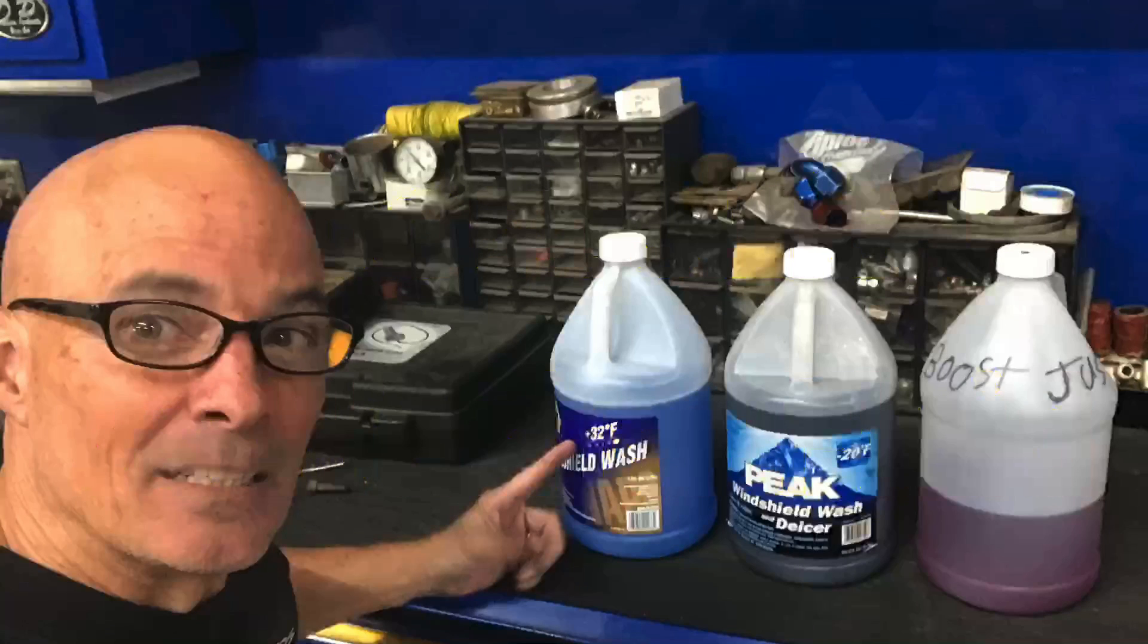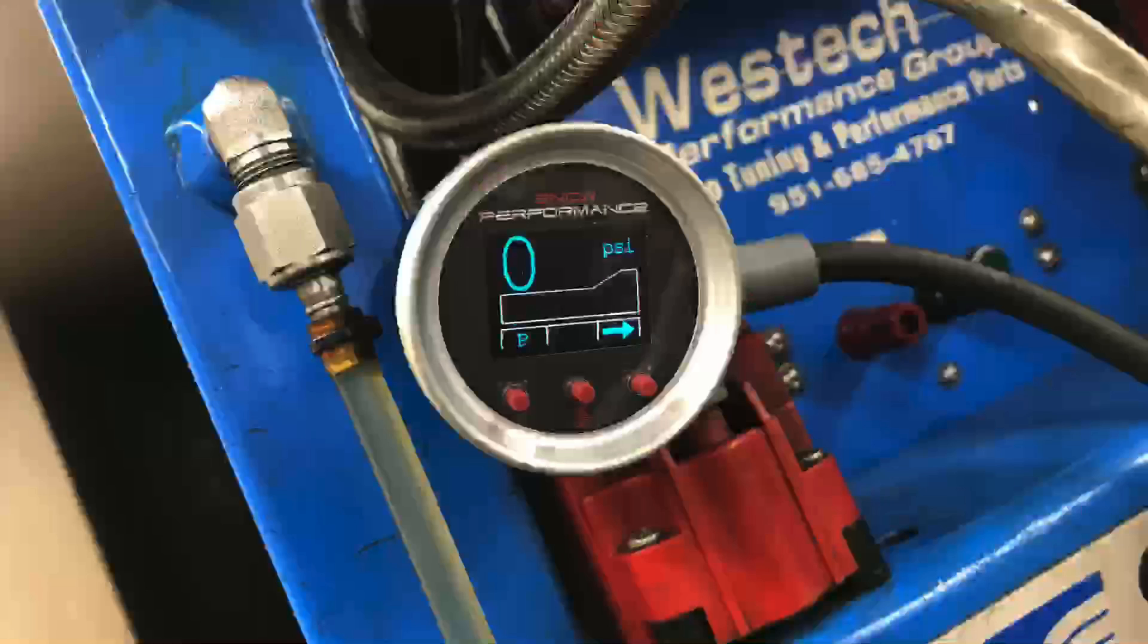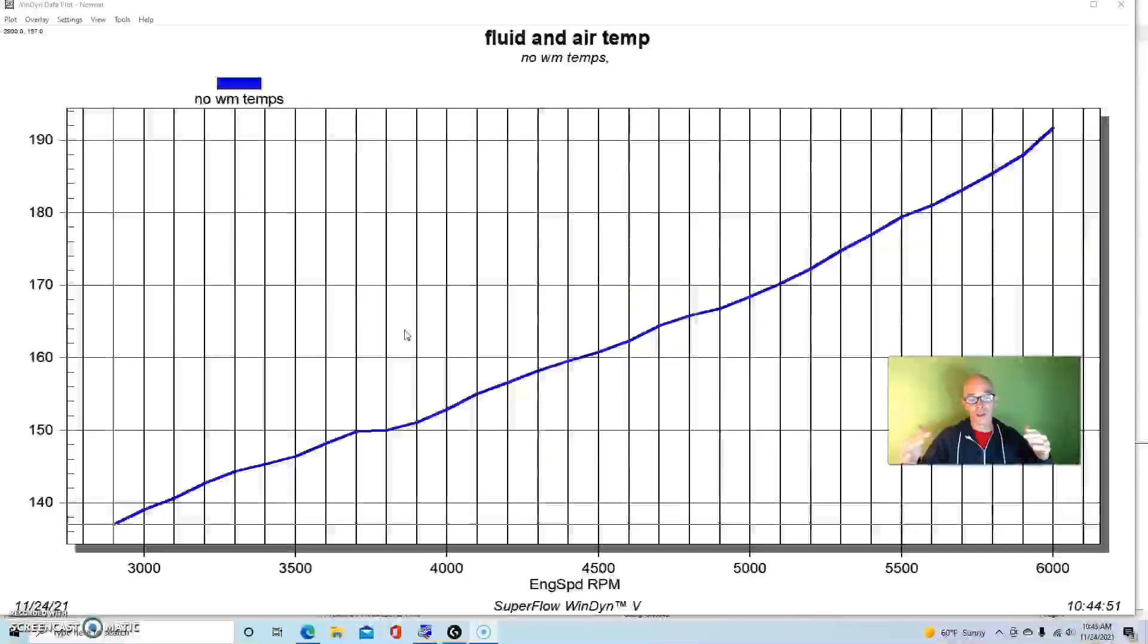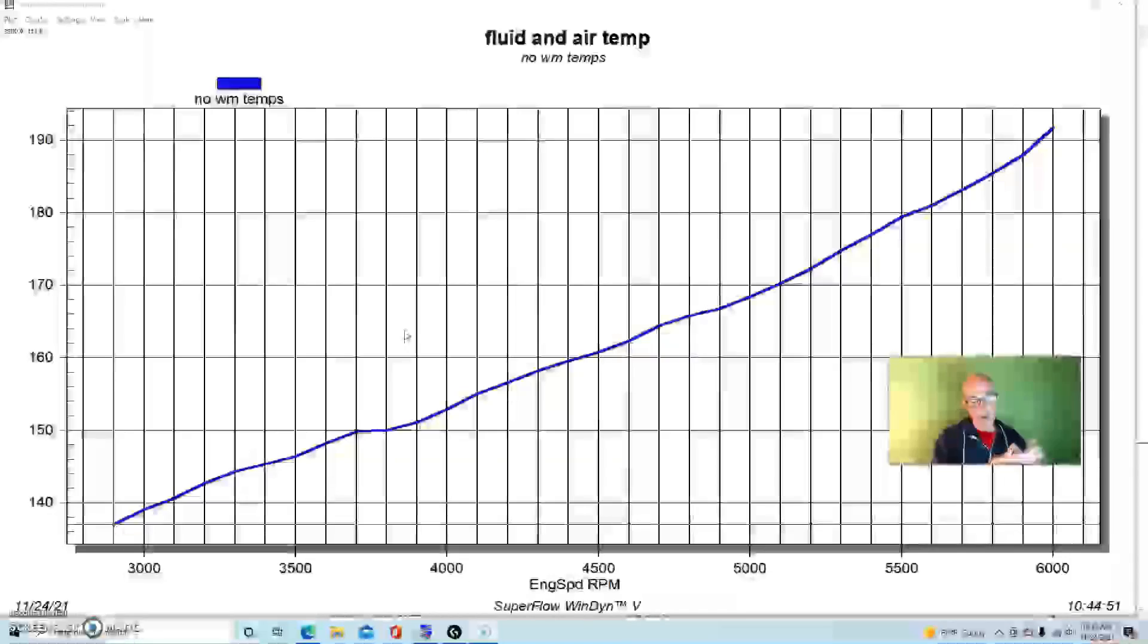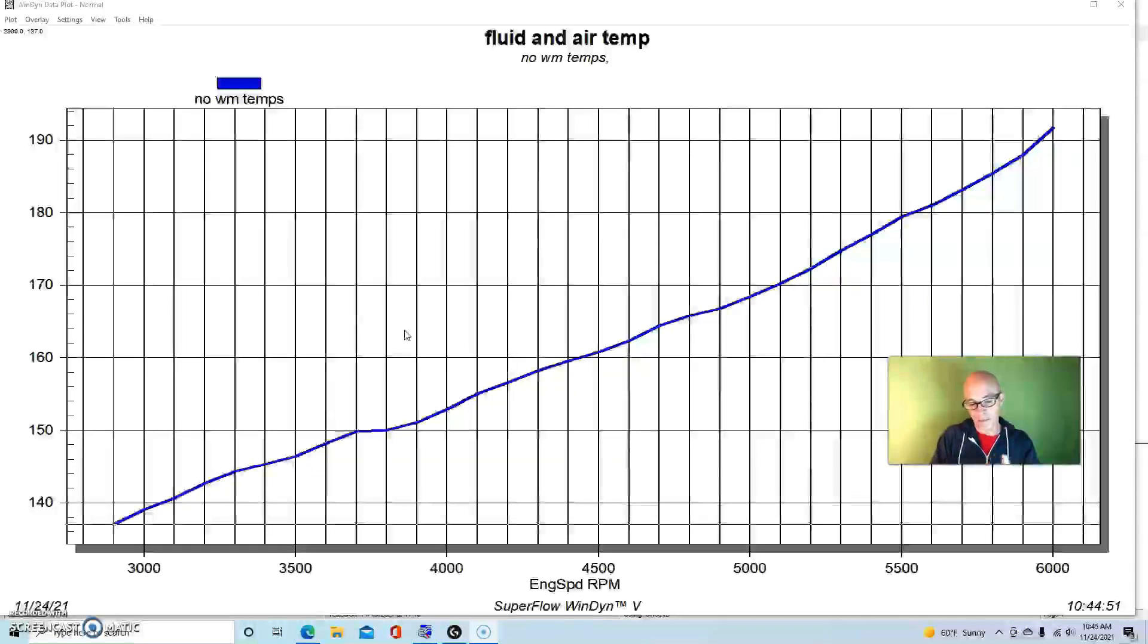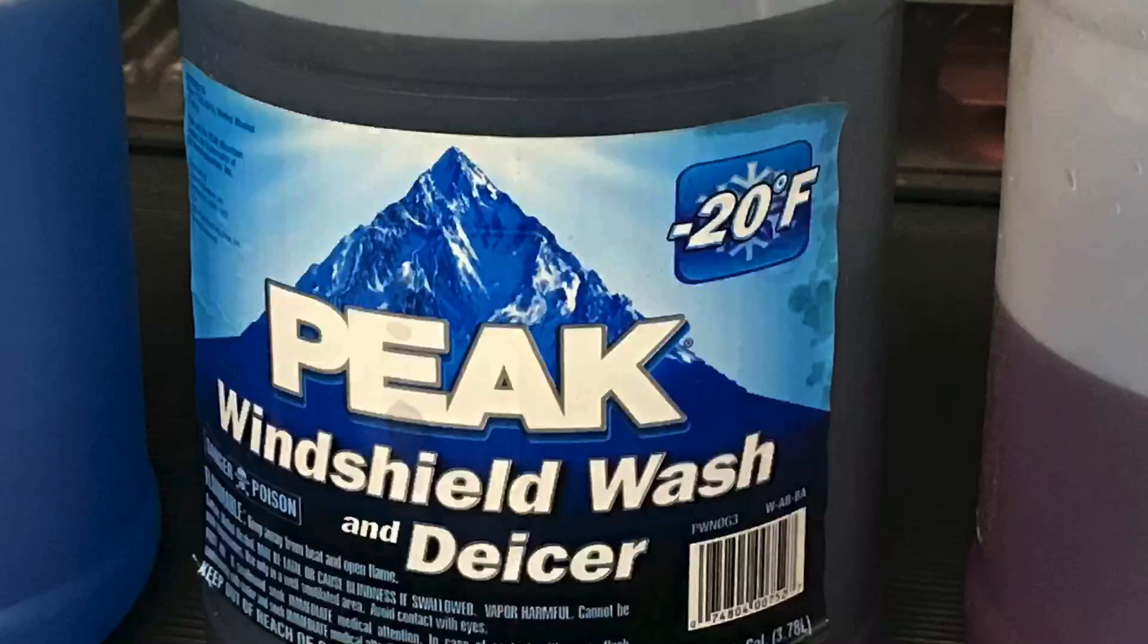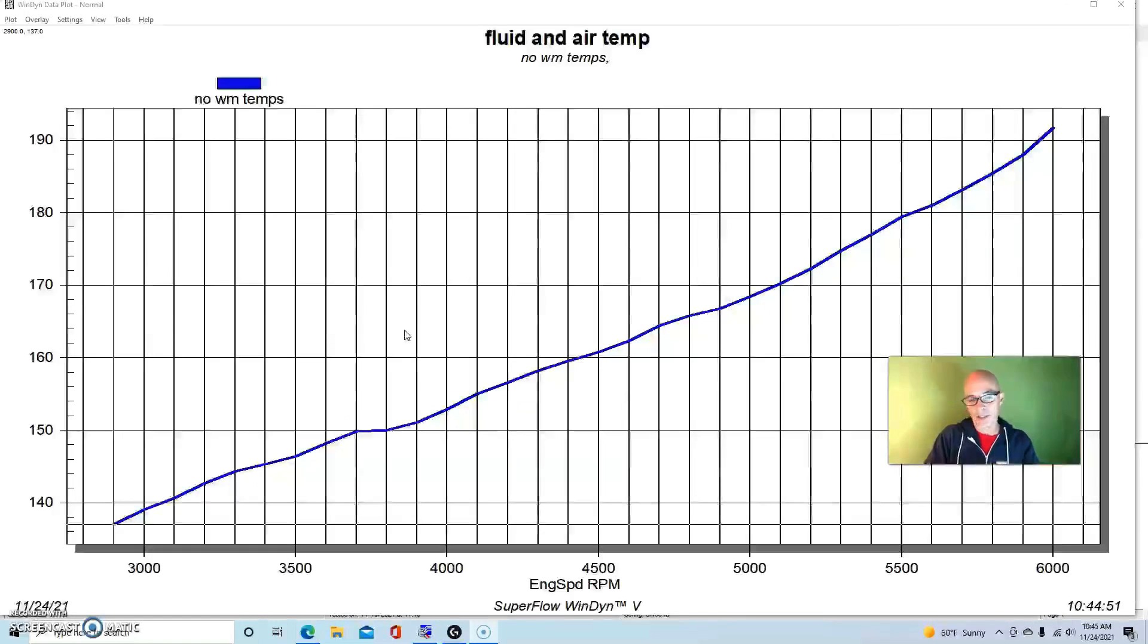OK, now that we've illustrated what water meth actually does in comparison to not having it, we showed you what happened with the charge temperatures and with the air fuel curves when we added the boost juice from the snow performance piece and the fact that we had to make some dramatic changes in the tune to even out the air fuel ratio after we added enough water to change the charge temperature. So now we're going to compare the boost juice to two different types of windshield washer fluid, which are very common. They're inexpensive. Guys use them all the time. We have one that's rated at 32 degrees, which they sell very common in California. And the other one is negative 20, which has a higher alcohol content, I think.